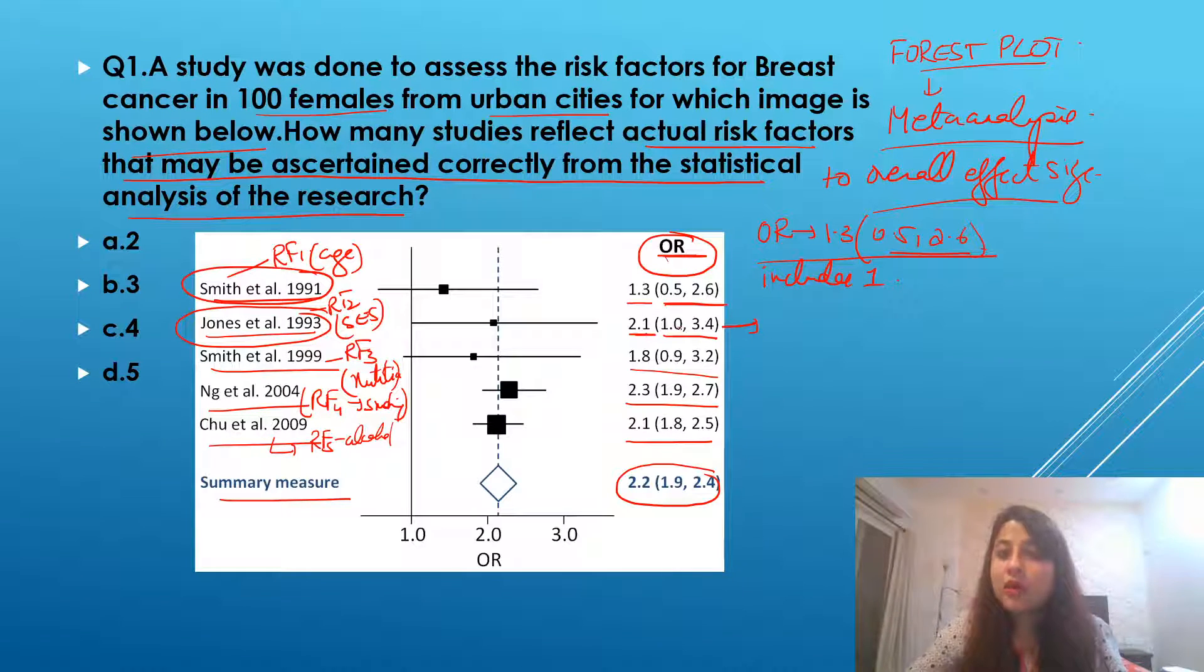Study number two. The odds ratio is 2.1. Interval is 1 to 3.4. So does it include one or does it not include one? This also includes one. Look at study number three. The interval of odds ratio, lower limit is 0.9 to 3.2. Does it include one or not? This also includes one.